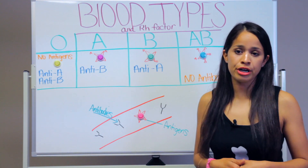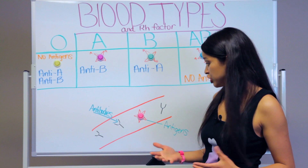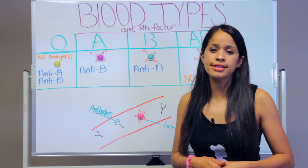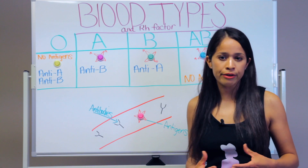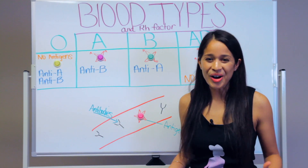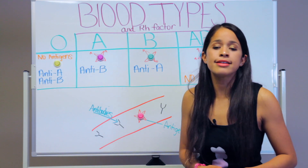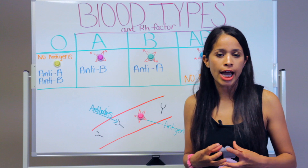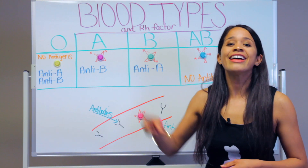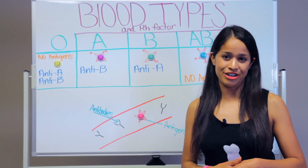Antibodies trigger an immune response and live outside in the plasma, interacting with antigens. Think of it like a key in a lock — these antibodies are floating around, and if they pick up a foreign invader, they're going to launch an attack. So if the wrong blood type is given to a patient, it can cause agglutination, where the blood clots and is not compatible, causing a blood transfusion reaction.